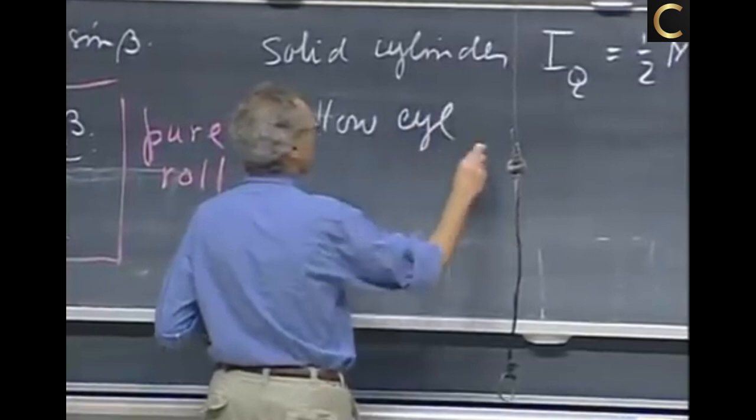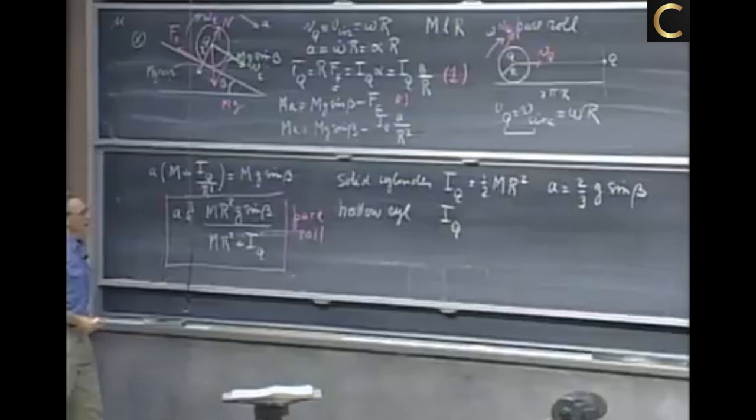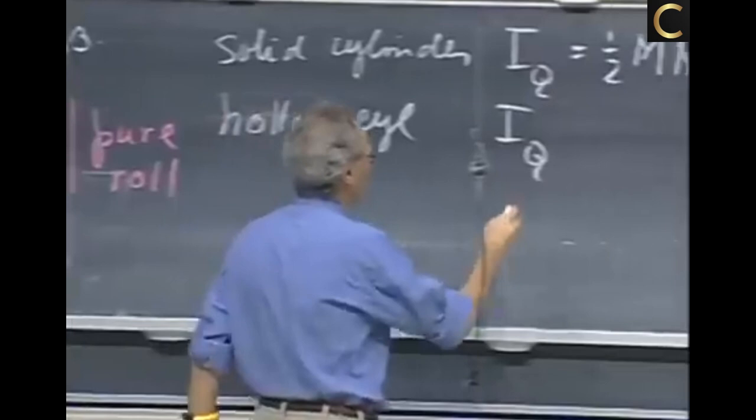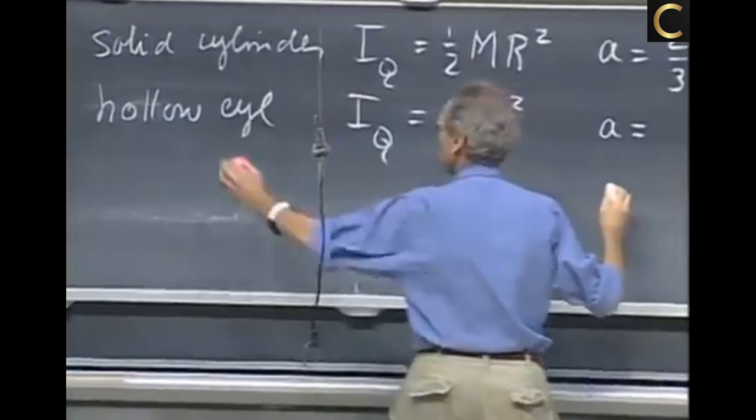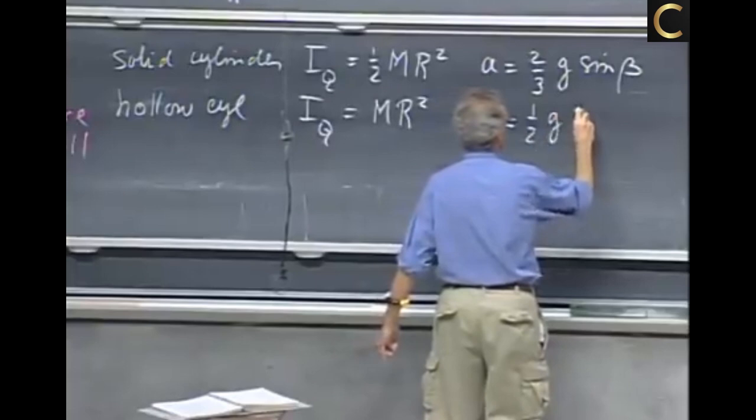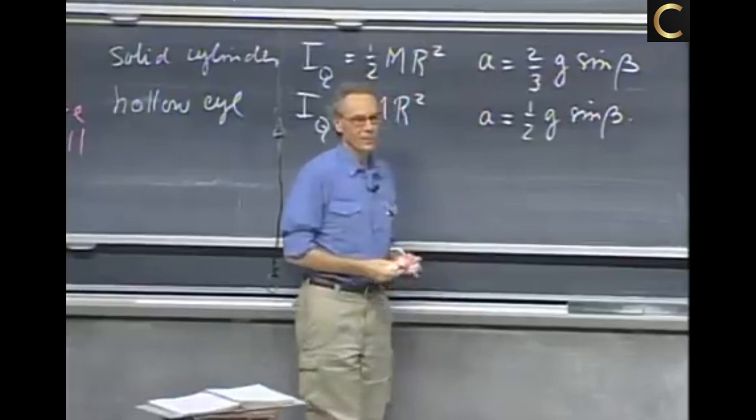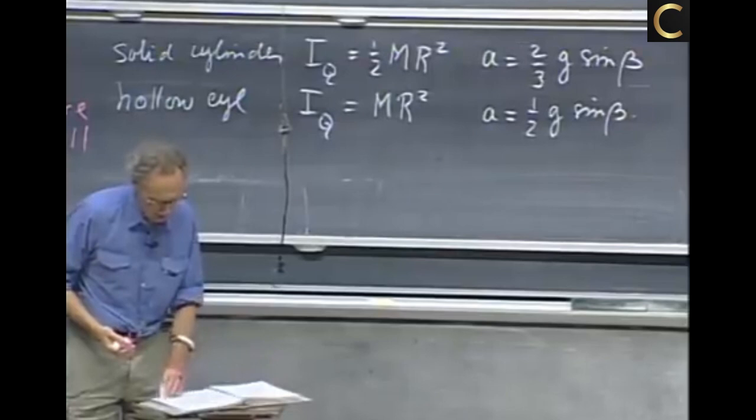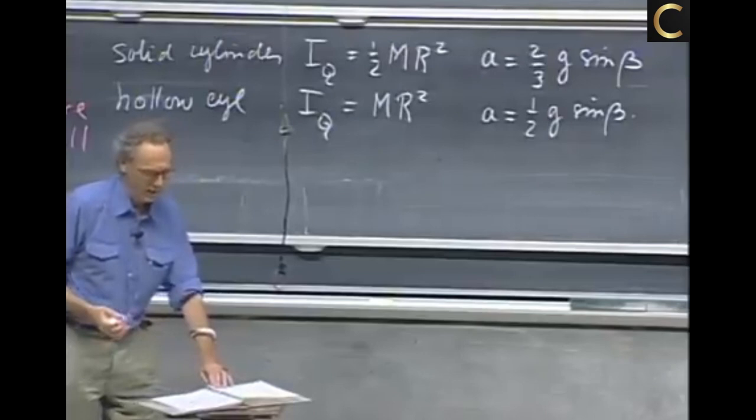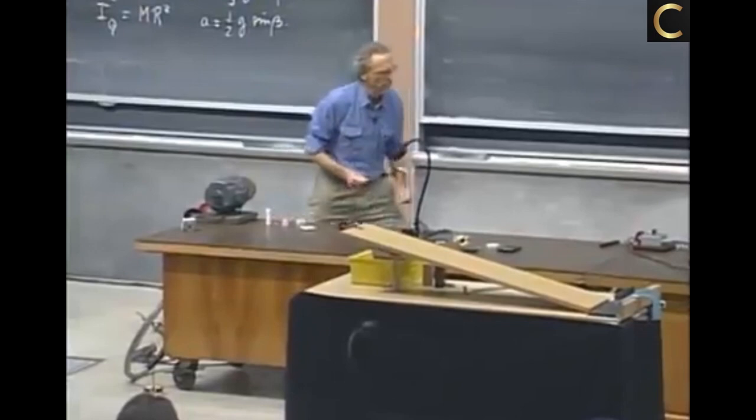So if we take a hollow cylinder, then the moment of inertia about this axis through the center of mass, through Q, if really most of the mass is really at the surface, then it's very close to mr², and then the acceleration, if I substitute in here mr², I get a two there equals one-half times g times sin beta. So this acceleration is less than this one. So the hollow cylinder will lose in any race against a solid cylinder regardless of mass, regardless of radius, regardless of length. And I want to show that to you.